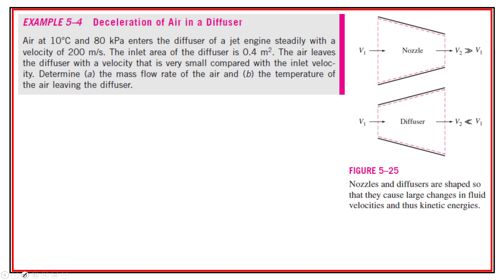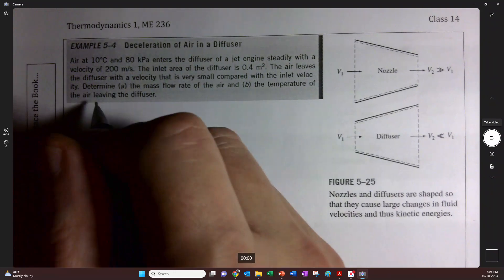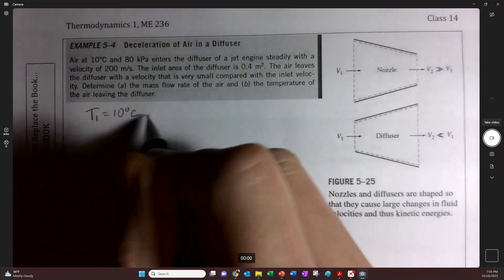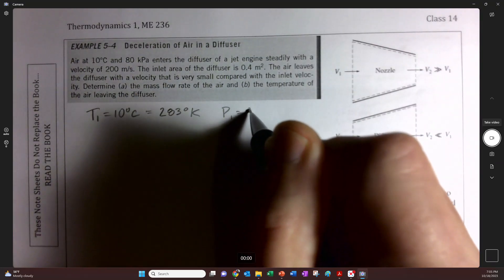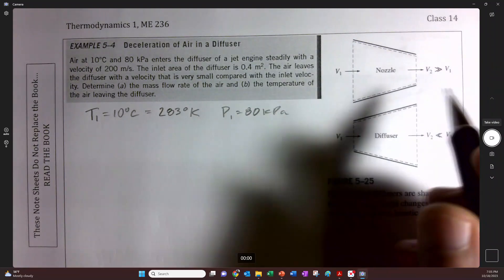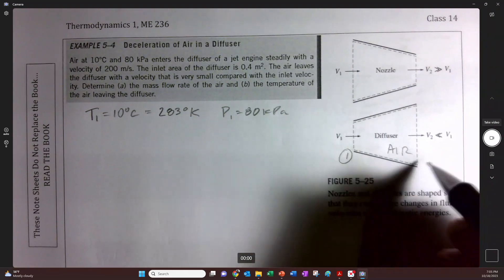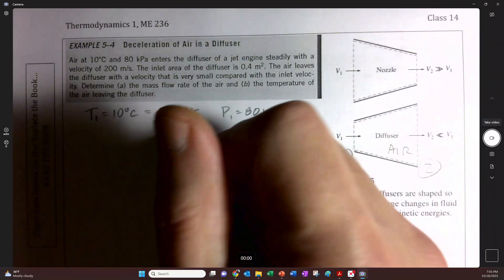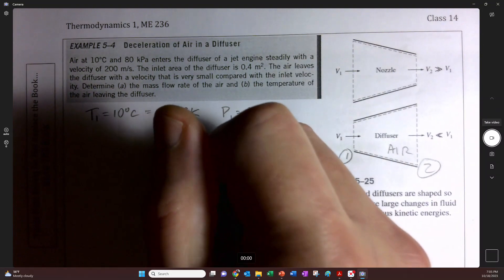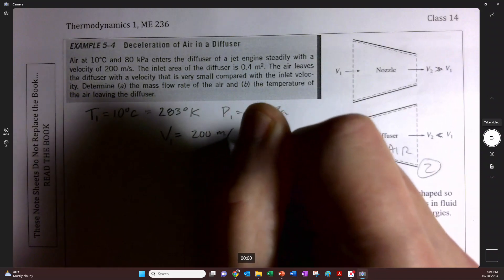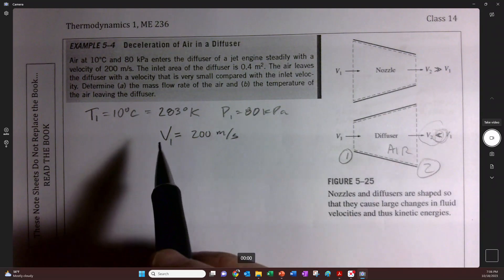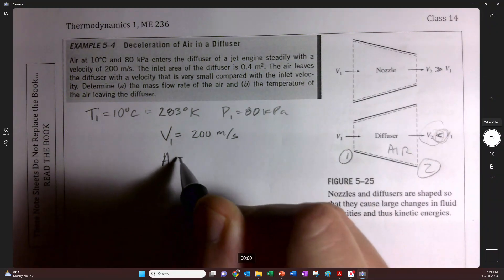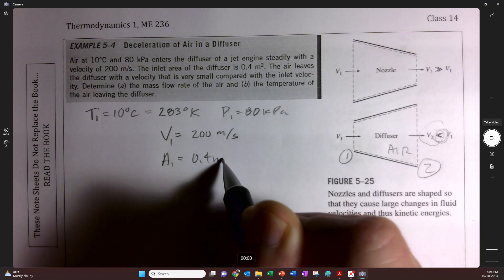So like a typical diffuser problem. T1 is 10 degrees Celsius, which we know is 283 degrees Kelvin, and P1 is 80 kilopascals, and we know this is air. This is a diffuser one and two. The entering velocity at one is 200 meters per second, and it slows down, much much smaller. The inlet area A1 is going to be 0.4 square meters.